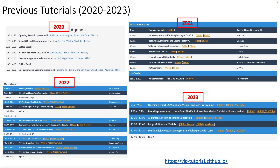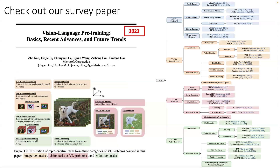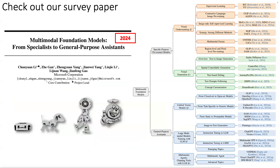We have also compiled the past two years' tutorials into two survey papers. The survey paper in 2023 focused more on vision language pre-training, and the survey paper in 2024 focused on the multi-modal foundation model. Please take a look at them.